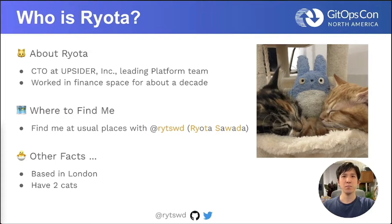A little bit about me. I'm the CTO at Upsider, leading the platform team, and also responsible for backend development. I have worked in the finance space for about a decade now. You can find me at the usual places with the handle RYT_SWD — that's my full name without vowels. I'm based in London and have two cats, as you can see in the picture to the right.